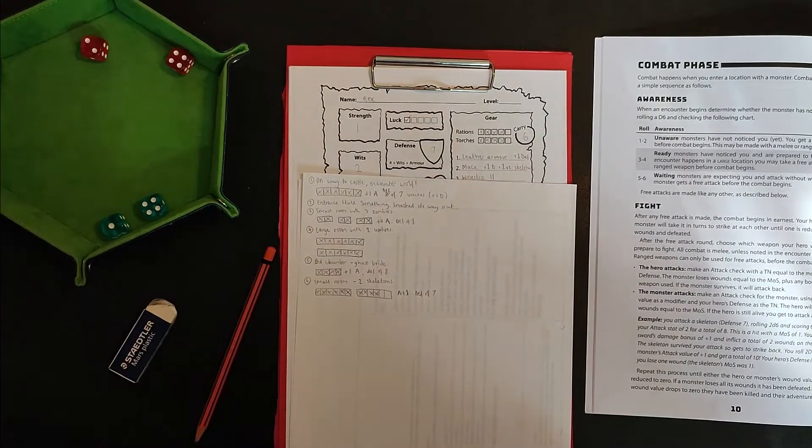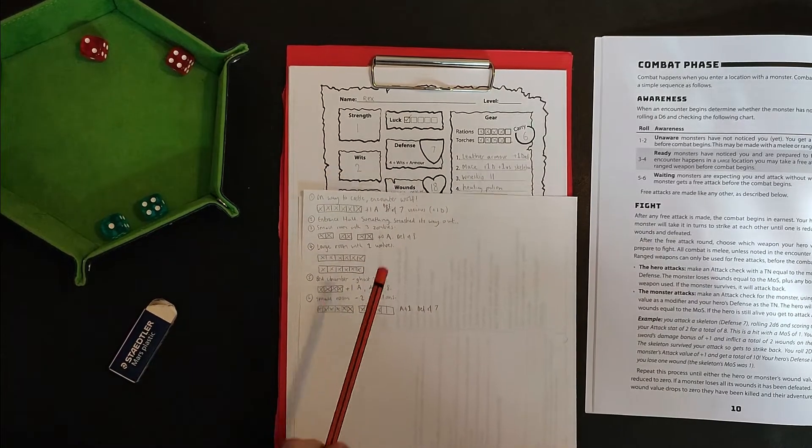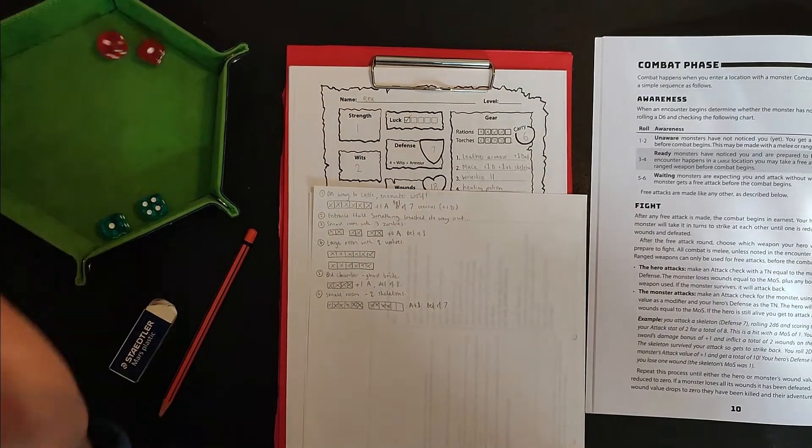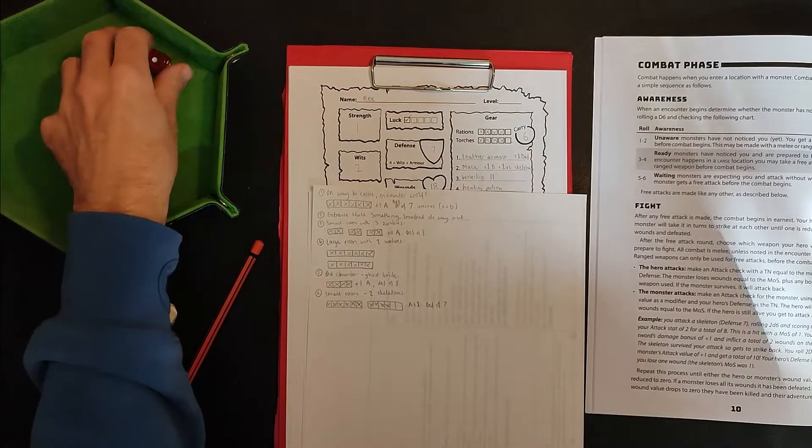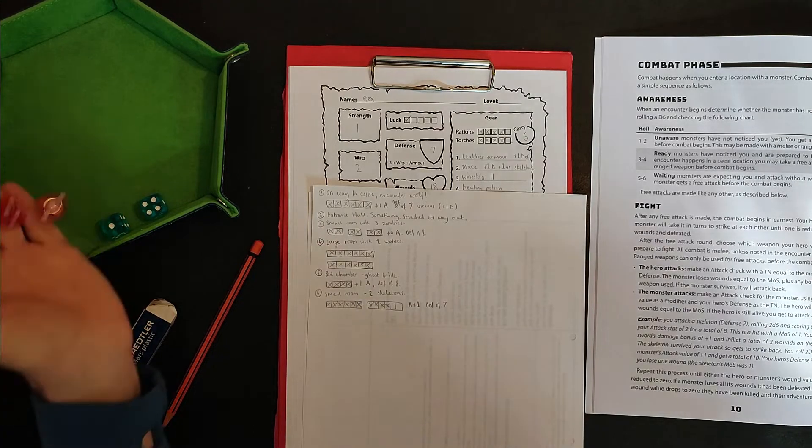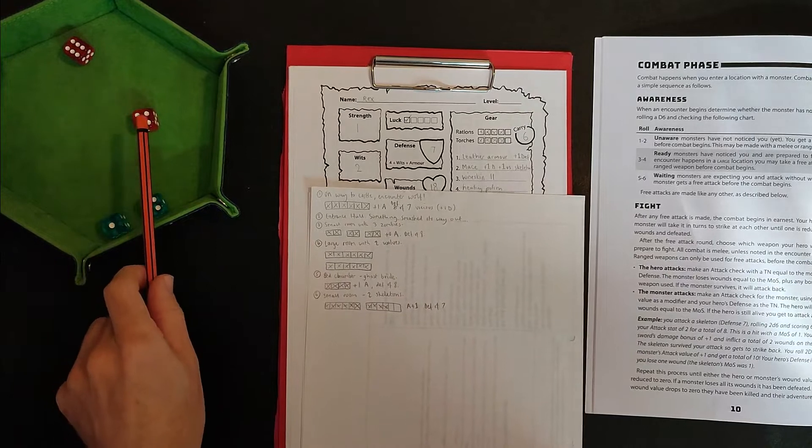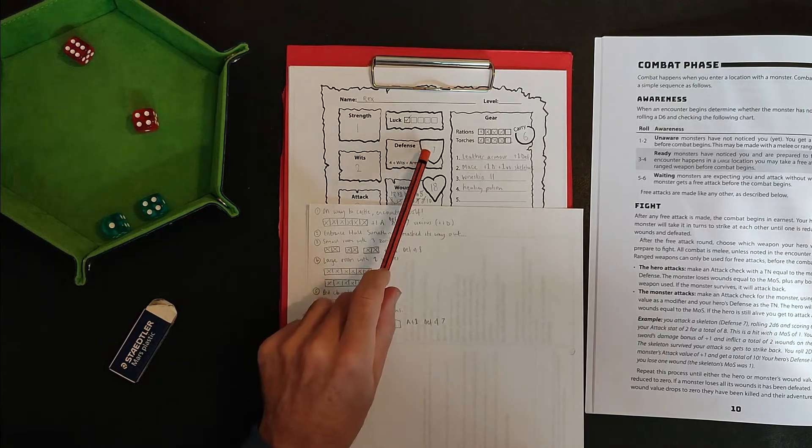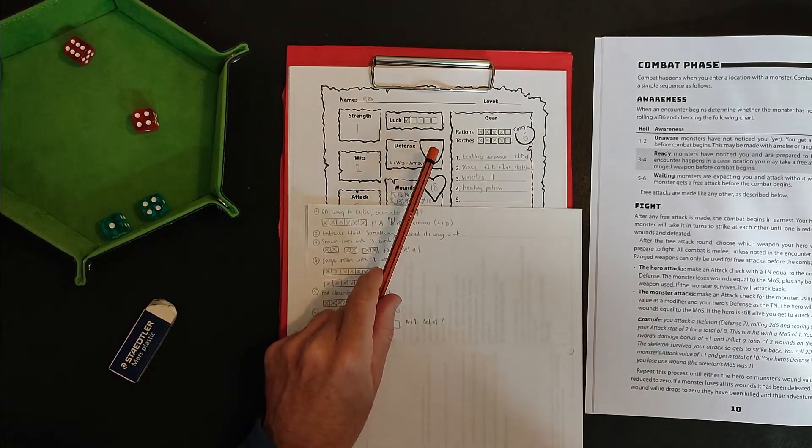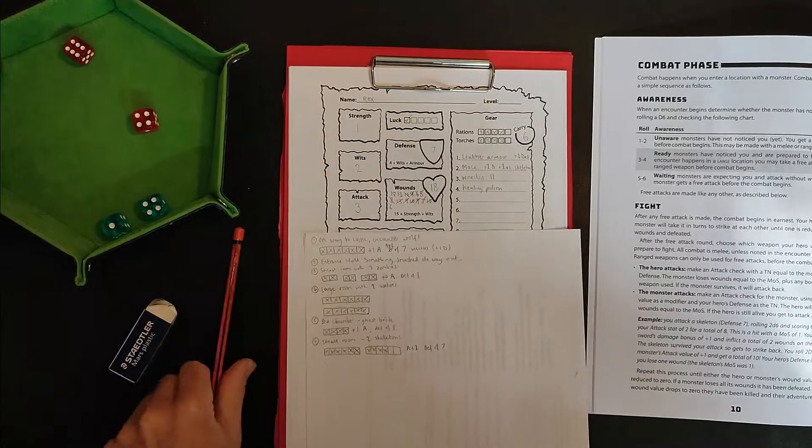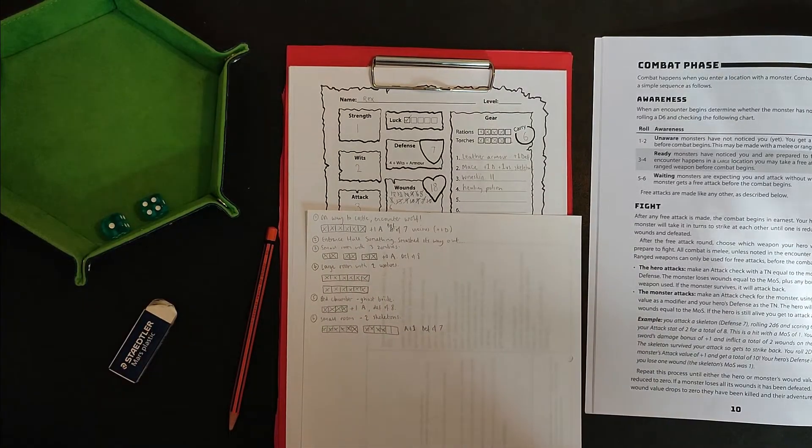Six, seven. Doesn't meet my defense of seven. So no damage done. Back to me again. Fail to do any damage. So the skeleton, not believing its luck, gets to attack me again. Oh, a bit worse. Six, that's 10. Plus one is 11. Which is seven, eight, nine, 10, 11, doing four points of damage. Annoying. Thought it was going well then. Thought it was going well. Okay, come on, let's finish it off.